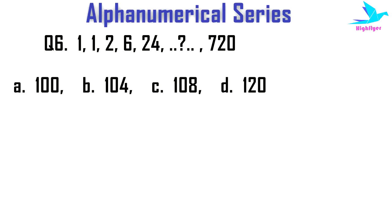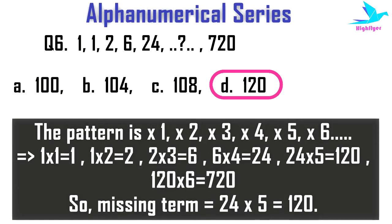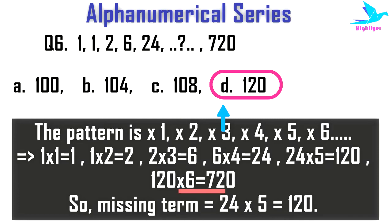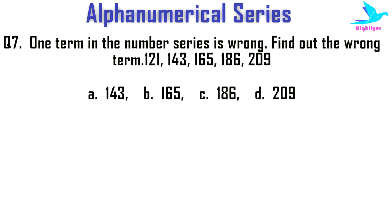Next example: find the missing number from the series 1, 1, 2, 6, 24, __, 720. The options are 100, 104, 108, or 120. The right option is D: 120. The pattern is ×1, ×2, ×3, ×4 — that means 1×1 = 1, 1×2 = 2, 2×3 = 6, 6×4 = 24. The next number would be 24×5 = 120, and 120×6 gives the last number 720. So the required number is 120.